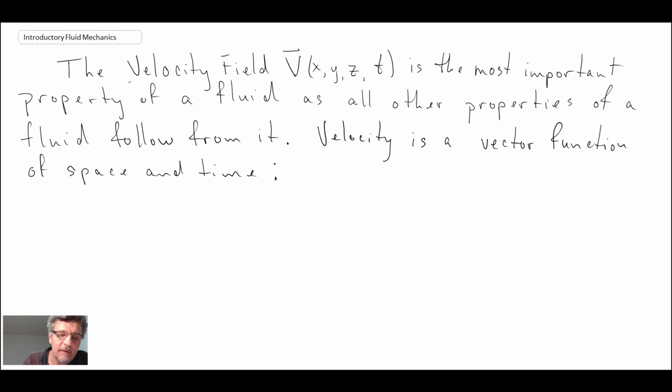So the velocity field, here we have it as capital V, and a function of space. It will be a function of both space as well as time. So let's take a look at the expression that we typically use. So we will give it a vector x, y, z, and t.